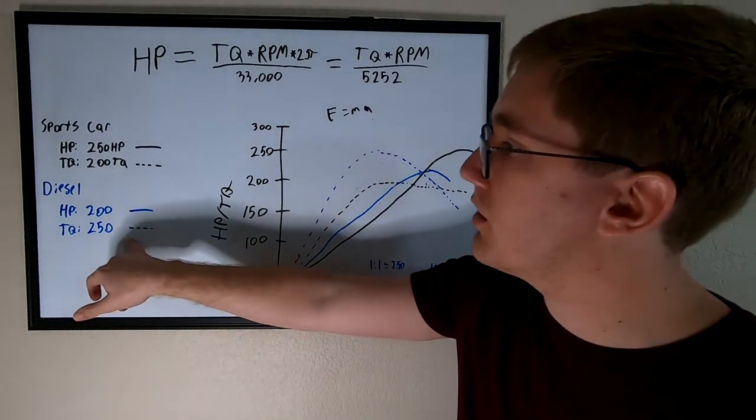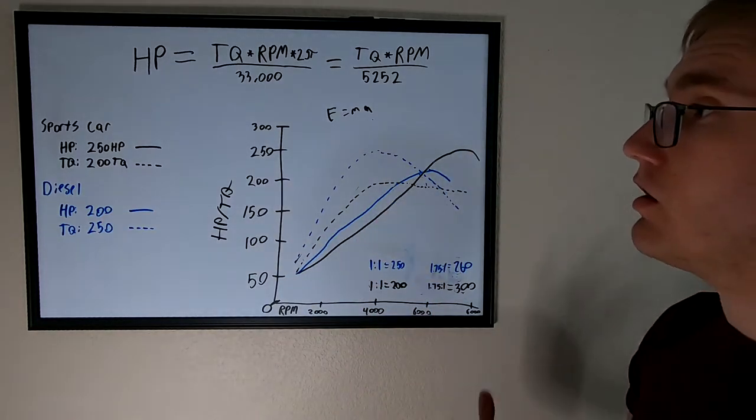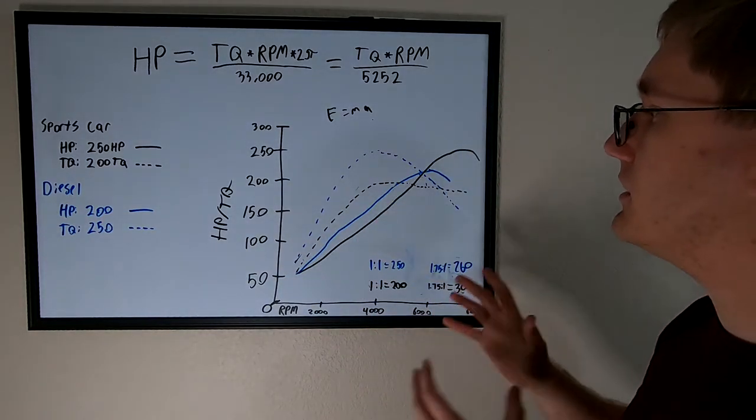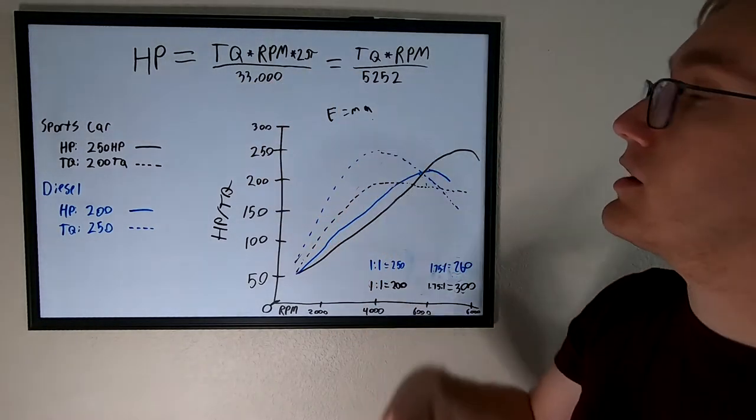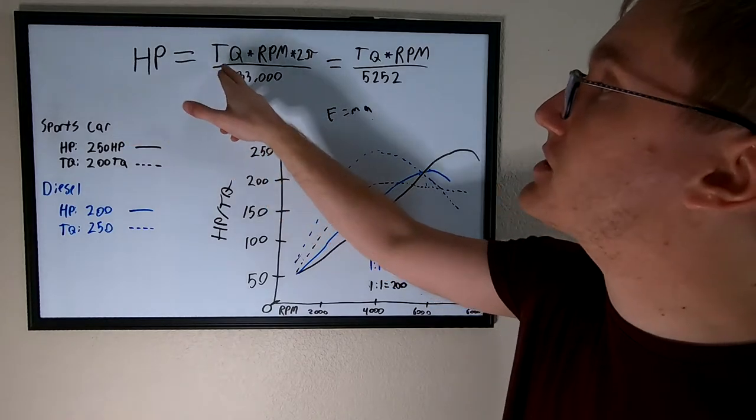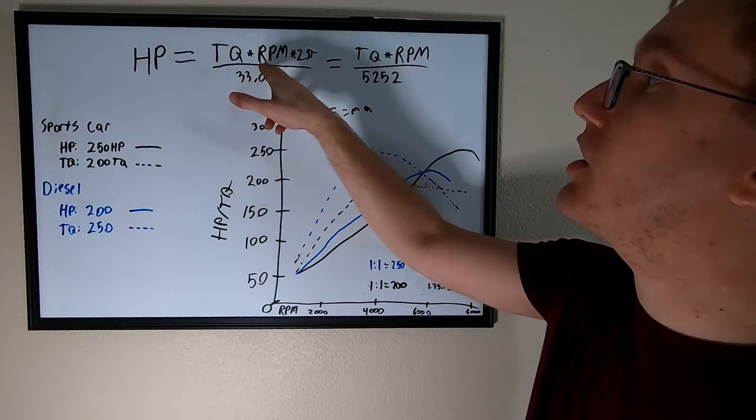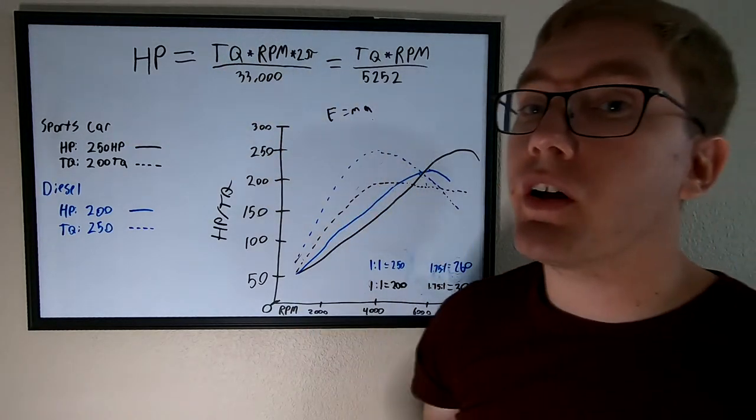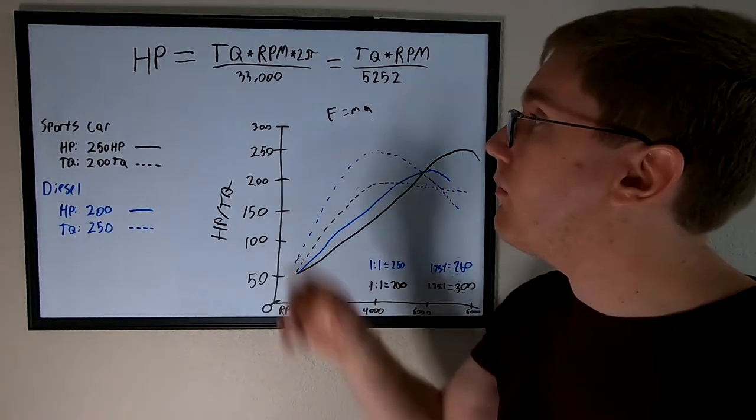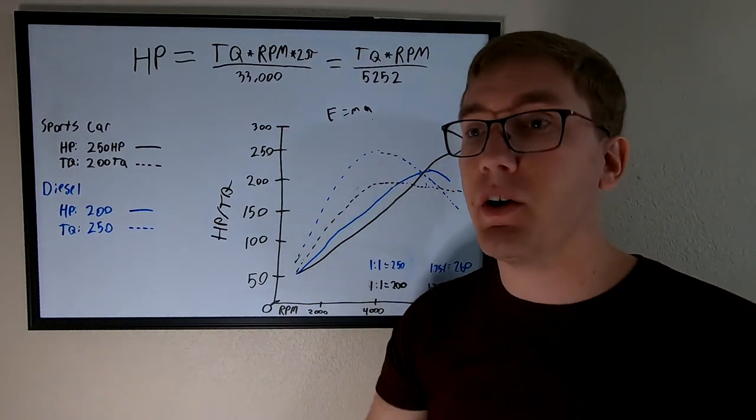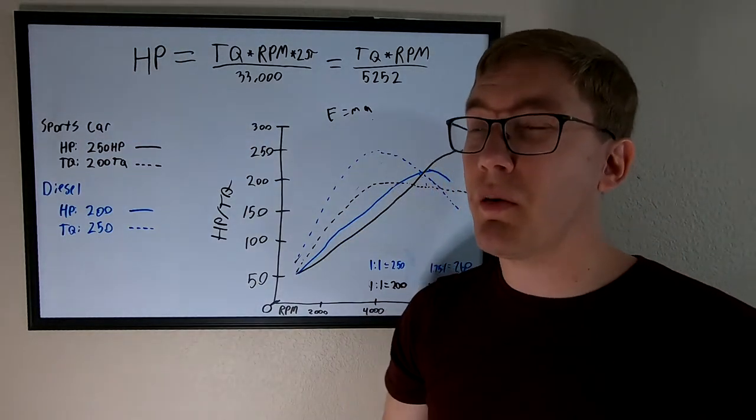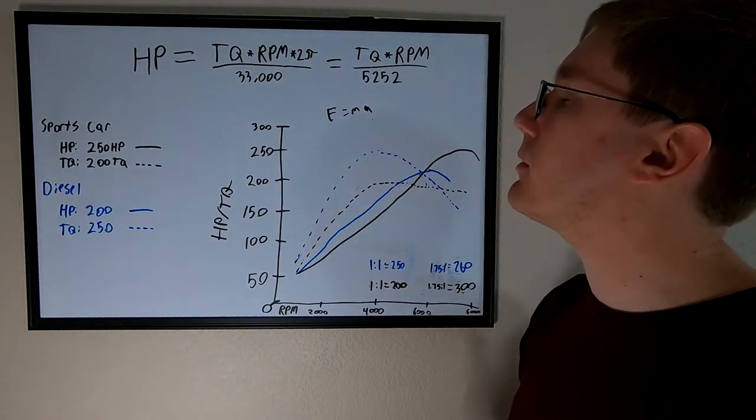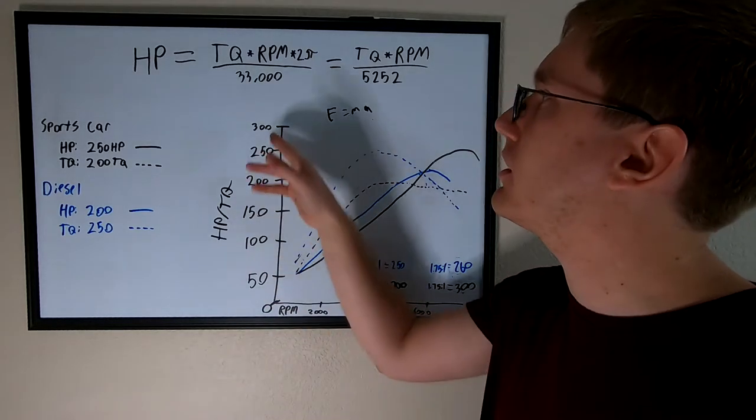So, here we have maybe what might be the torque curves and horsepower curves for both of these. The dotted lines here will represent our torque, and the solid lines are horsepower. To get an idea of how these are calculated, you need to look at the equation for horsepower and torque and how they're related. Horsepower is actually equal to torque times the RPM times 2 pi divided by 33,000. Those constants come from an experiment that was done by the gentleman who actually created the unit for horsepower back in the early 1800s, involving a pony and some rocks.